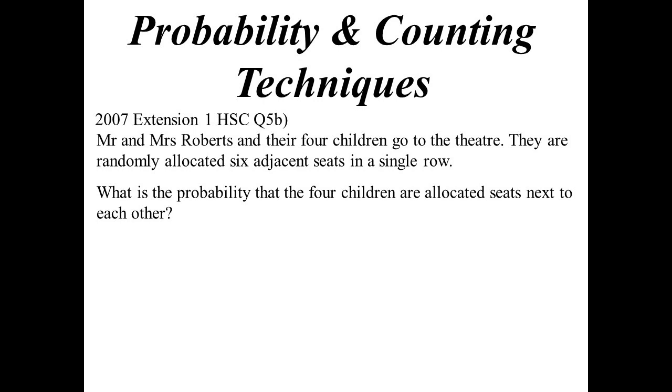This one's from the 2007 HSC. Mr. and Mrs. Roberts and their four children are going to the theatre. They're randomly allocated six adjacent seats in a single row. What's the probability that the four children are allocated seats next to each other?